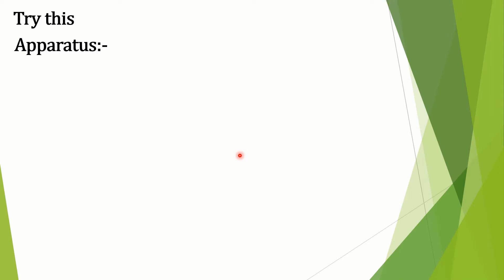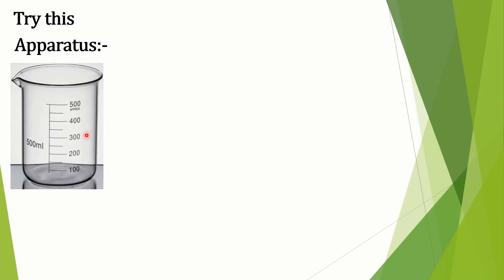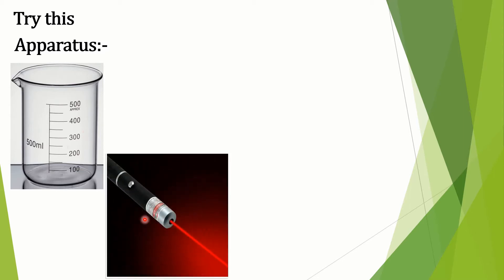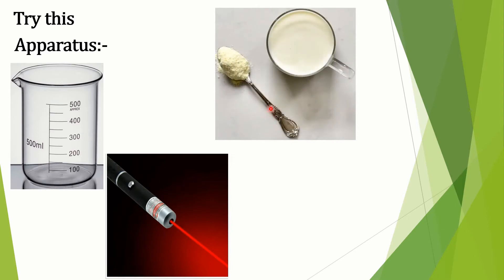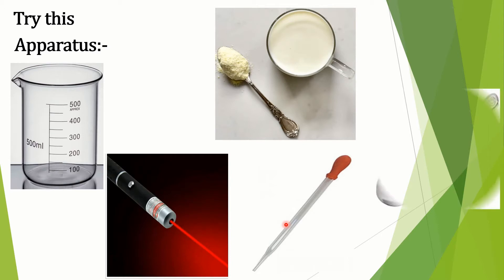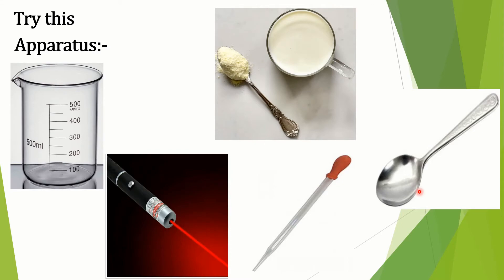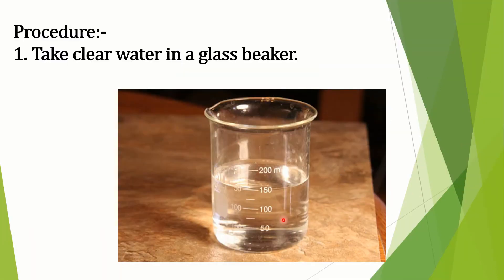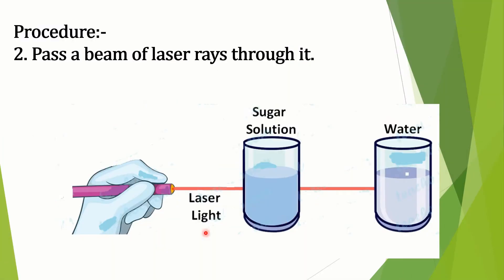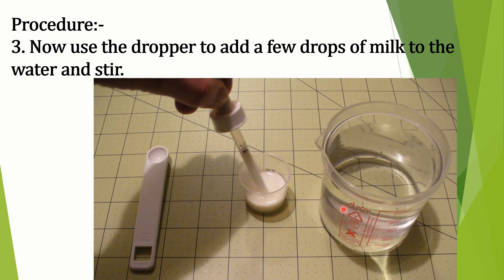Students, let us do one activity. For that, we need the following apparatus: a glass beaker, a diode laser or laser pointer, milk or milk powder, a dropper, and a spoon. First step: take clear water in a glass beaker and pass a beam of laser rays through it. Check whether the beam is seen in the water.